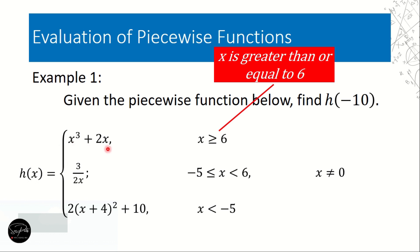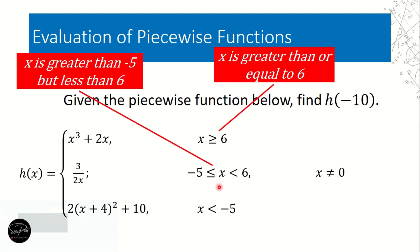Negative 10 is not greater than 6. The second condition is x is greater than negative 5 but less than 6 — meaning x should be between negative 5 and 6. So if x is between negative 5 and 6, we would use the second function.